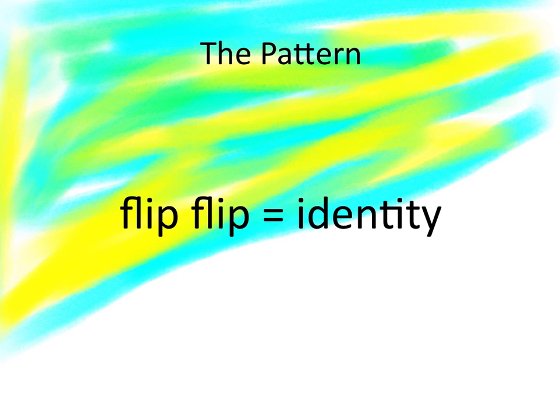There's an operation of flipping. There's an operation of identity. And flipping twice is the same as identity. That's the pattern that they share.